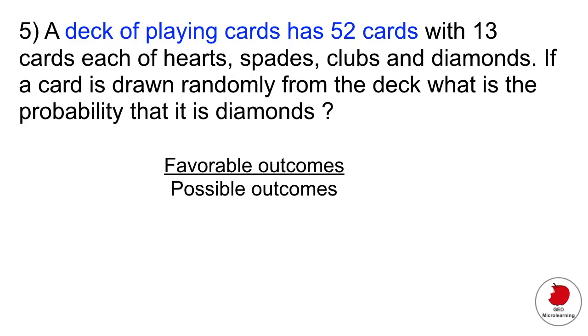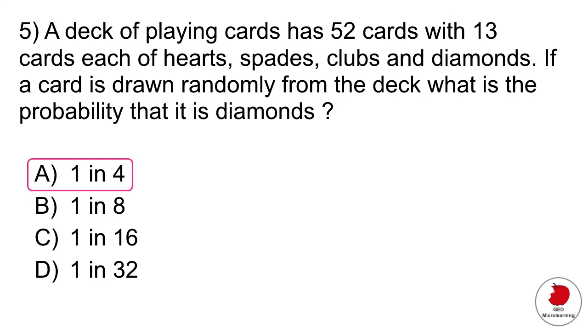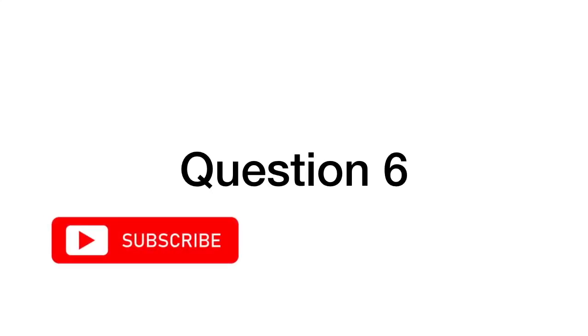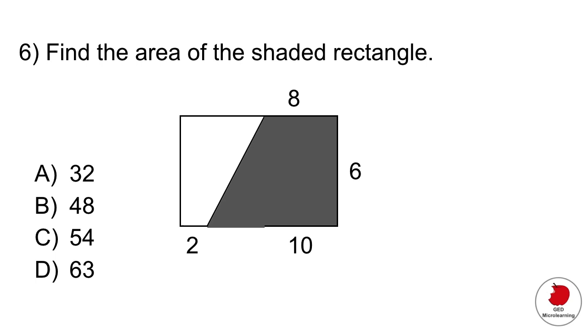If we go back to the question, the possible number of outcomes is 52 because there's a total of 52 cards you can draw. Specifically they're telling us that they want to make sure it's diamonds, and from the question it tells us there's 13 cards that are diamonds. So you would set up your equation like that, 13 over 52. If you reduce this fraction further, 13 divided by 13 is 1 and 52 divided by 13 is 4. So it would be 1/4 or 1 in 4.